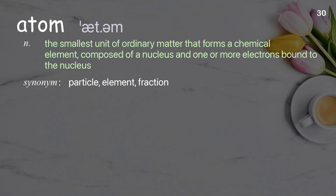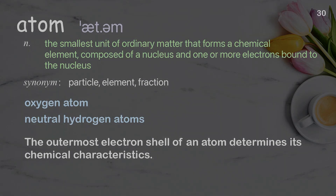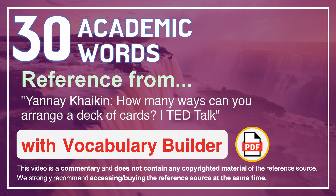Atom. The smallest unit of ordinary matter that forms a chemical element, composed of a nucleus and one or more electrons bound to the nucleus. Examples: oxygen atom, neutral hydrogen atoms. The outermost electron shell of an atom determines its chemical characteristics.